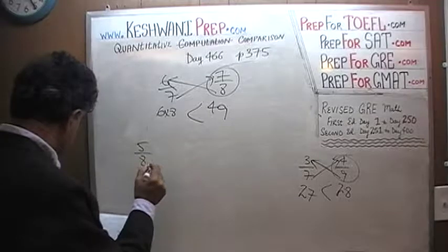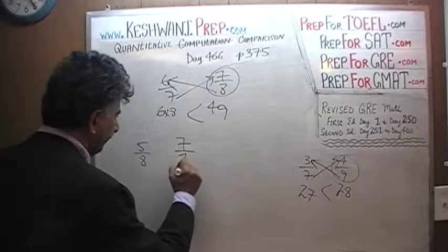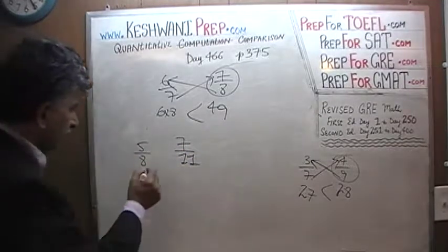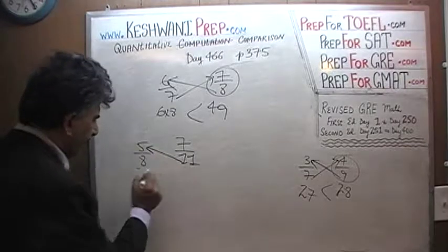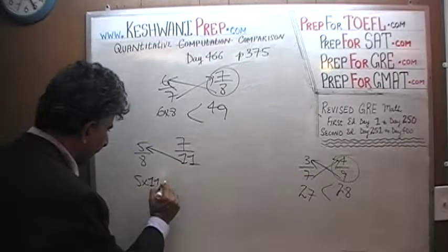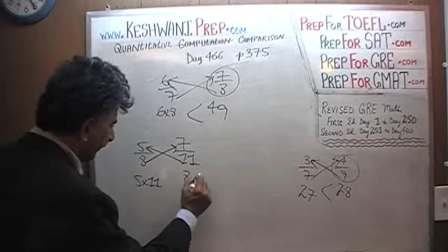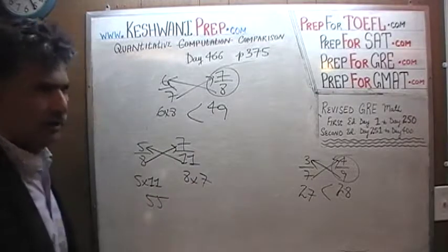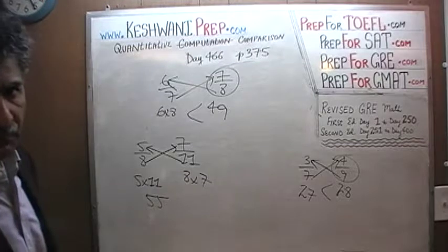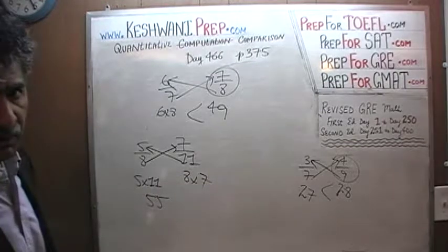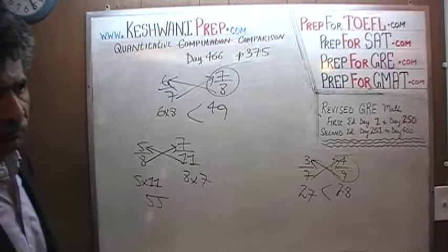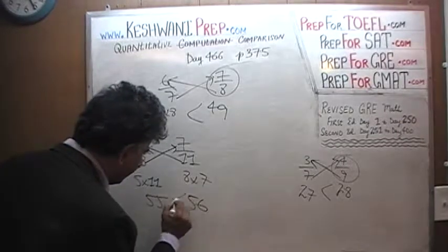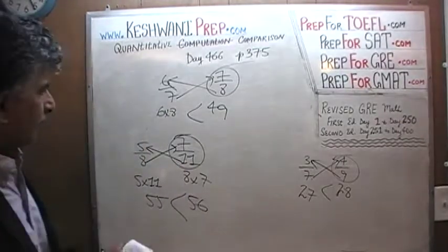Let's do one more: 5/8 versus 7/11. 5 times 11 is 55 versus 8 times 7 is 56 — so 7/11 is bigger. The answer is 7/11.